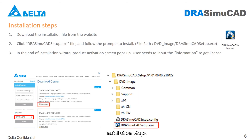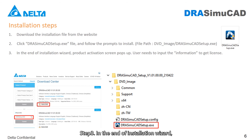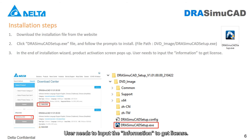Installation steps. Step 1: Download the installation file from the website. Step 2: Click the DIA Simu CAD setup file and follow the prompts to install. Step 3: At the end of the installation wizard, a product activation screen pops up. The user needs to input information to get a license.